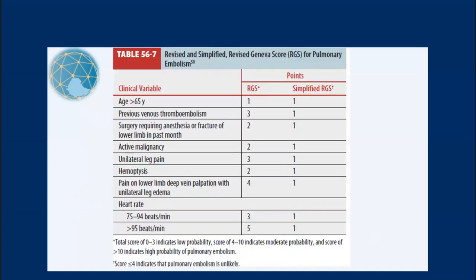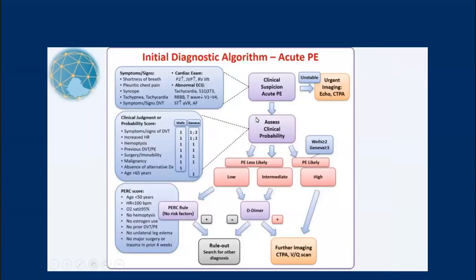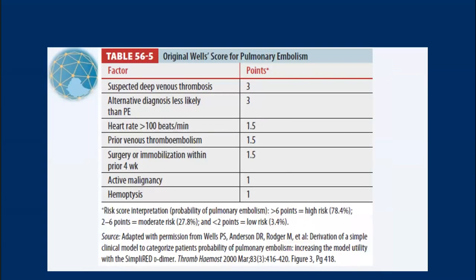For example, the revised Geneva and simplified Geneva scores include clinical variables like age, prior thromboembolic events, active malignancy, surgery, unilateral leg pain, hemoptysis, and tachycardia. You assign scores to classify the patient's risk probability of having pulmonary embolism. Currently it is recommended to use either the Geneva or Wells score. Whichever scoring system you use, you need to classify patients. When a patient presents with signs and symptoms of PE, the signs and symptoms alone have low probability for reaching the diagnosis, so you need to assess clinical probability using either Wells or Geneva criteria.